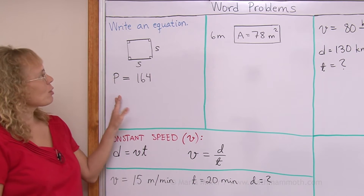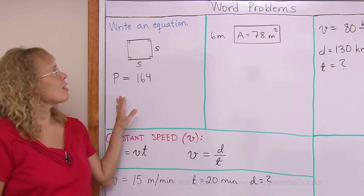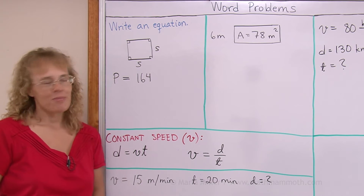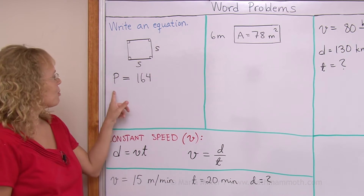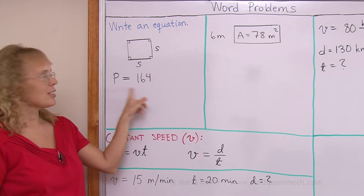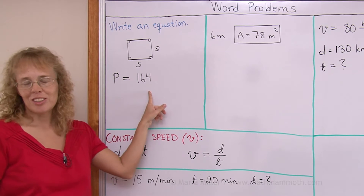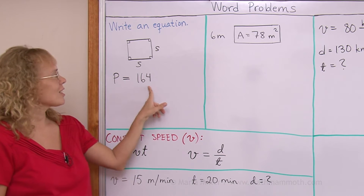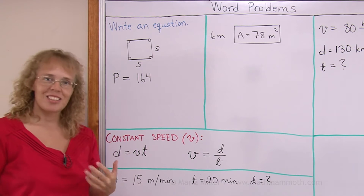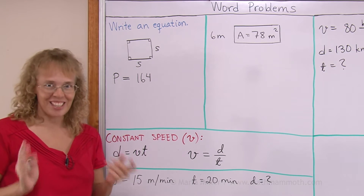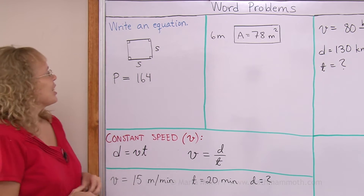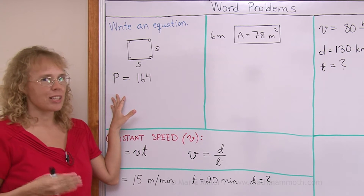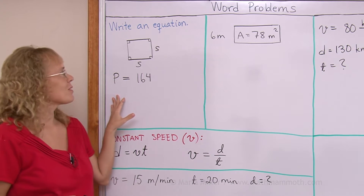The first situation says to write an equation. Now, you might say that here's my equation: p equals 164. Yeah, that's an equation, you're right. But I think the maker of the problem has something else in mind.